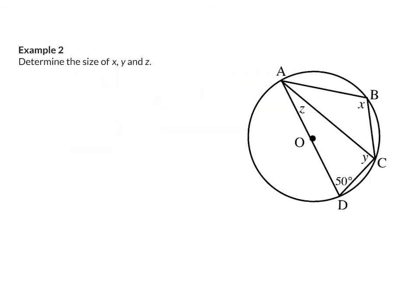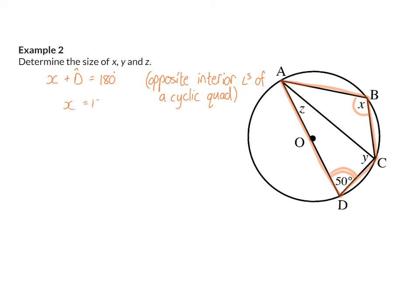Example 2: determine the size of X, Y, and Z. Looking at our picture, we have a cyclic quadrilateral because A, B, C, and D are all on the circumference of the circle. That means angle B and angle D are opposite interior angles and should add up to 180 degrees. So angle X plus angle D equals 180 degrees — opposite interior angles of a cyclic quadrilateral. Therefore X equals 180 minus 50 degrees, which means X is 130 degrees.